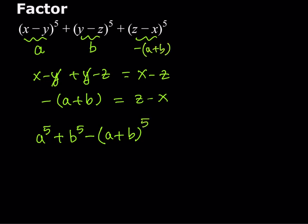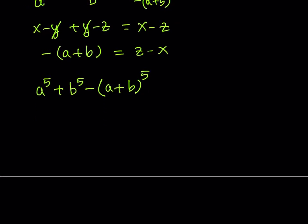So this is what I'm getting. In other words, if you can factor this, then we've already factored the original expression. But how do you factor this? First of all, a plus b quantity to the fifth power can be expanded using the binomial theorem.